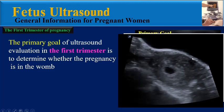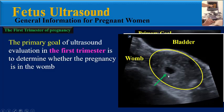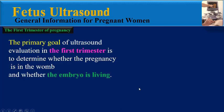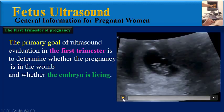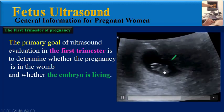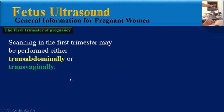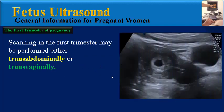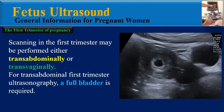Like this image, where we can see the bladder, the womb, and the pregnancy sac in the womb — and whether the embryo is living or not, like this live fetus with normal fetal heart. Scanning in the first trimester may be performed either transabdominally or transvaginally. For transabdominal first trimester ultrasonography, a full bladder is required.